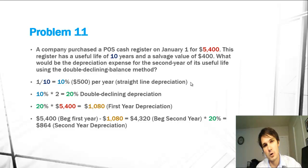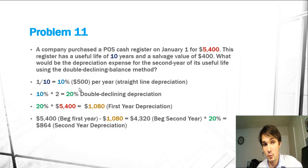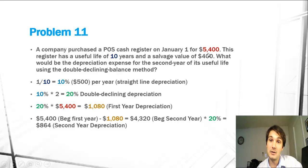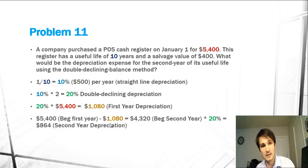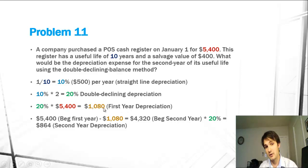For double declining balance depreciation we take 10% and multiply it by 2 to get 20%. We're not going to use the residual value at all — we're going to take the original value and not subtract it out. So 20% times $5,400 gives us our first year of depreciation, which is $1,080.